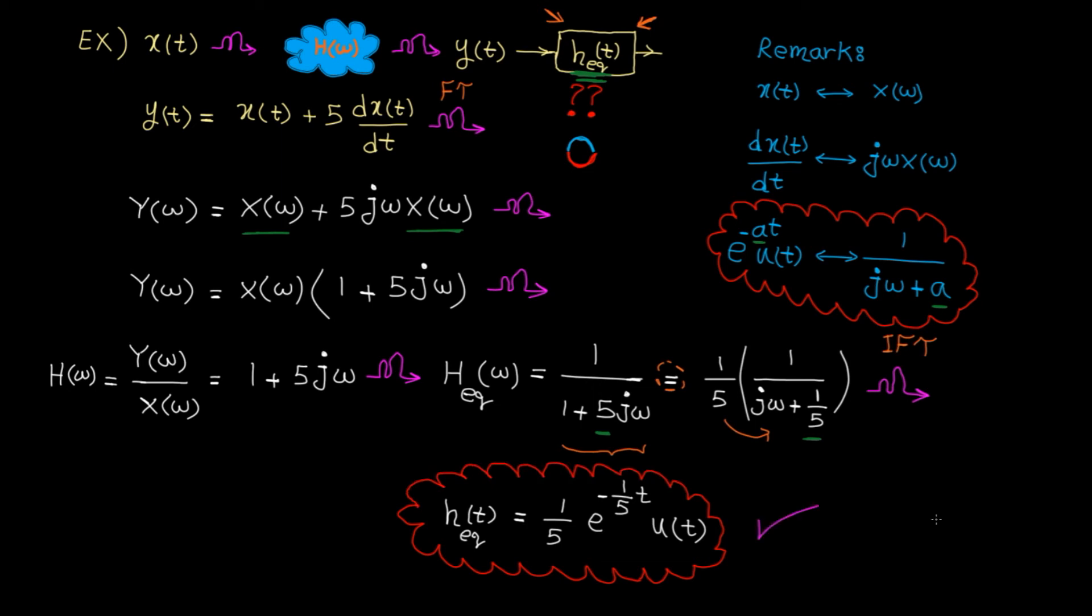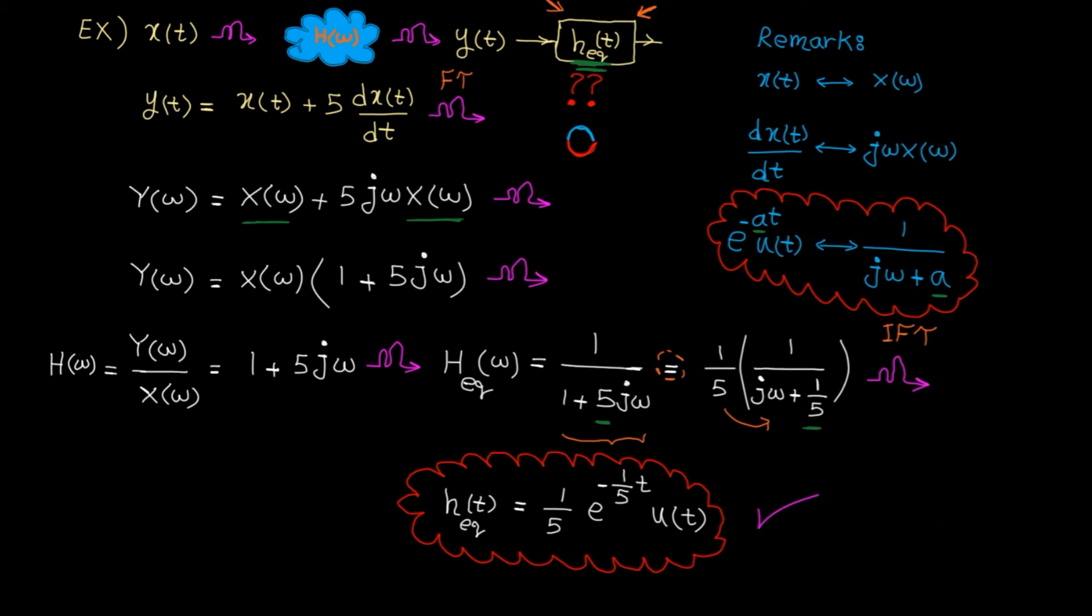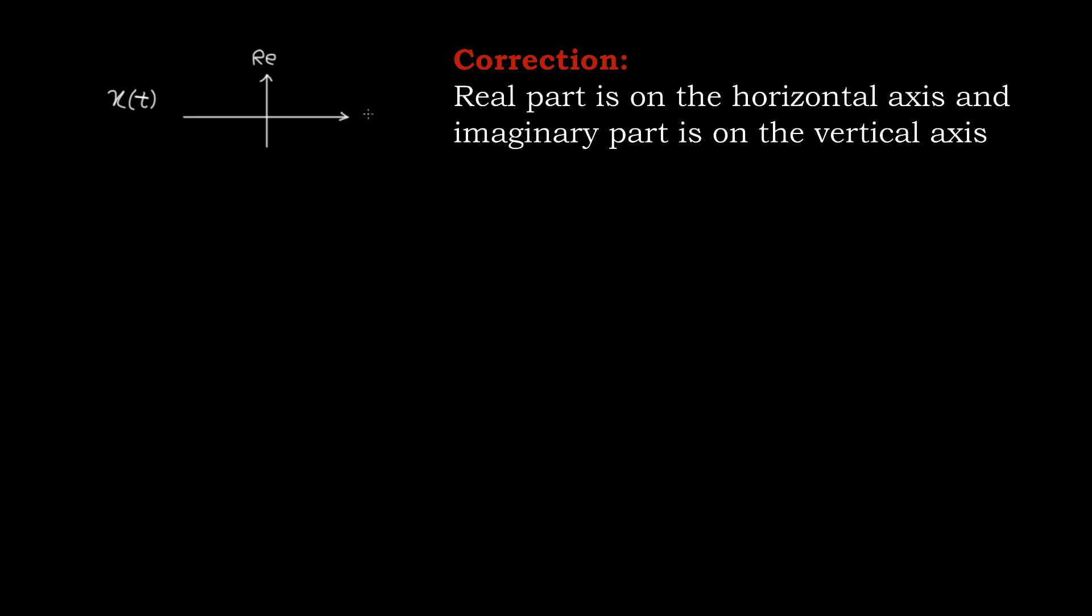To fully understand the concept, let's see a practical application of equalization in communication systems. Let's consider this Cartesian plane where we have real and imaginary parts. And let's assume the signal can be either minus 1 or 1.